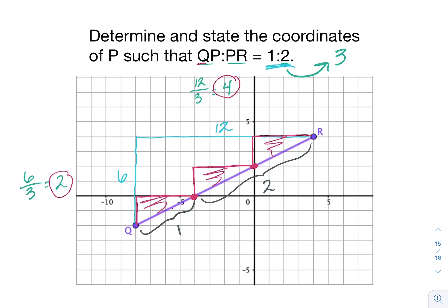That means that this point right here is what splits the segment into a one to two ratio. This is the location of point P. My final step is to write the coordinates of that point. P is at the point (-4, 0).